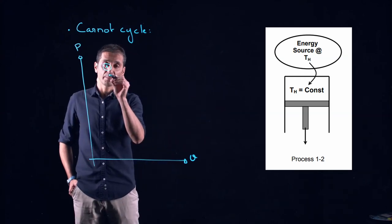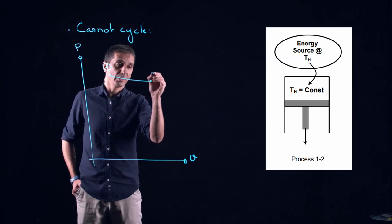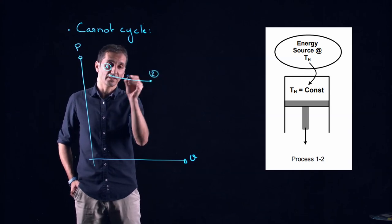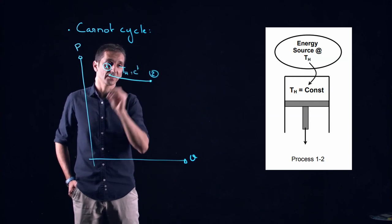By doing this the piston will move down reaching state two and we are doing this at a certain temperature TH that remains constant.